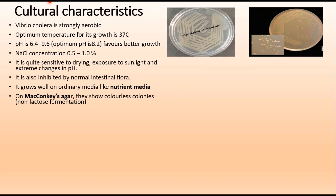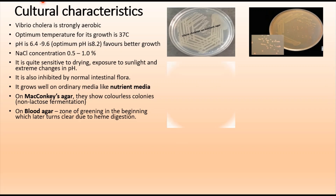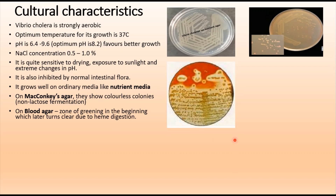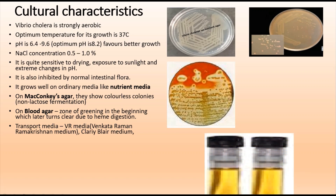On blood agar, colonies are surrounded by a green zone showing clear zones of heme digestion, indicating beta hemolysis. For transport media, the best options are Penktraman-Ramakrishnan medium and Cary-Blair medium. These are mainly used for transporting samples from epidemic and endemic locations to laboratories.